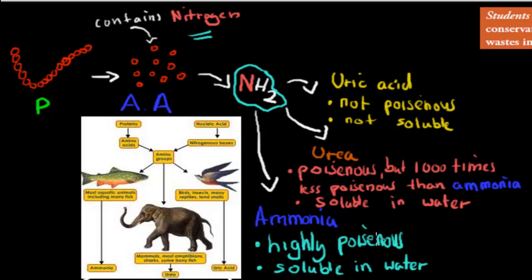Ammonia is highly poisonous and soluble in water. Urea is poisonous but 1000 times less poisonous than ammonia, and it's also soluble in water, so it dissolves in water. Uric acid is not poisonous and not soluble in water, so it doesn't dissolve in water.